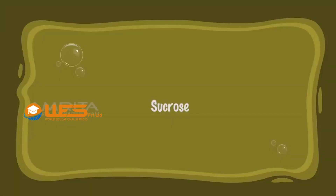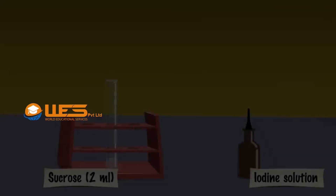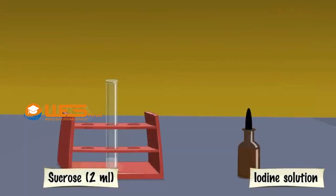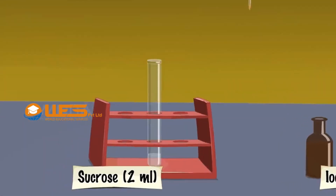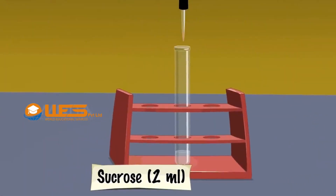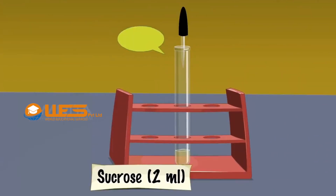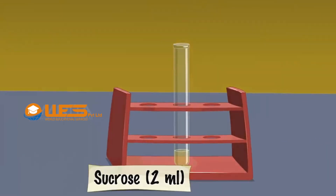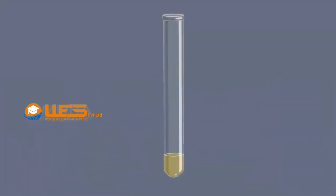Sucrose. Take a few drops of iodine solution using a dropper. Add 2 drops of iodine solution into a test tube containing 2 ml aqueous solution of sucrose. There will be no characteristic change, indicating the absence of starch.